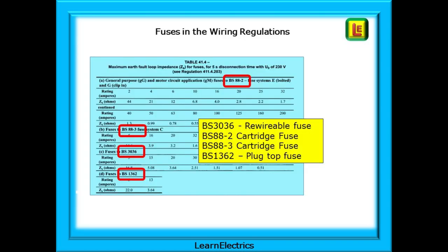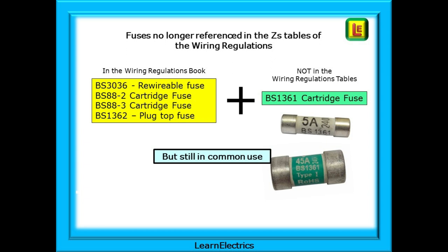The wiring regulations give ZS data for a limited range of fuses on table 41.4. We have BS 3036 rewireable fuses, BS 88-2 and BS 88-3 cartridge fuses, and the BS 1362 plug top fuse. BS 1361 cartridge fuses no longer appear in the tables, although they are still a very popular fuse especially in older commercial and industrial installations. Just because it's not in the regs book doesn't mean that none exist.